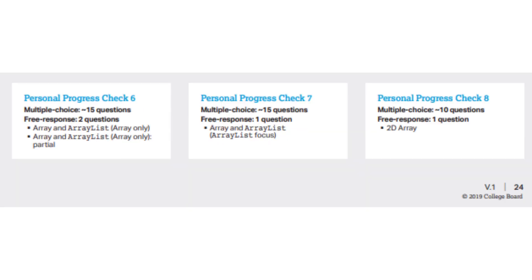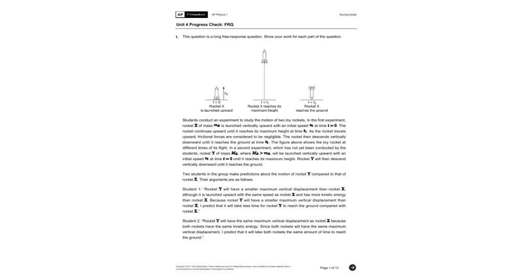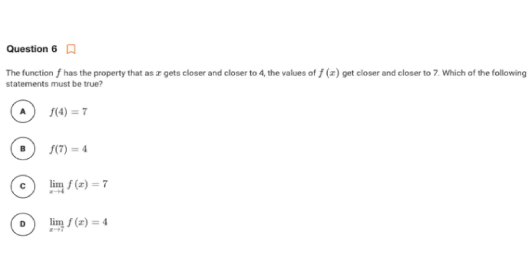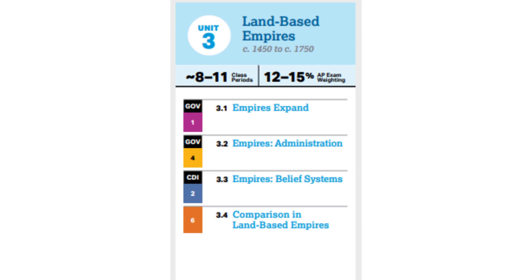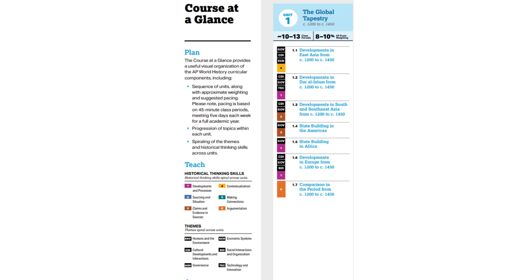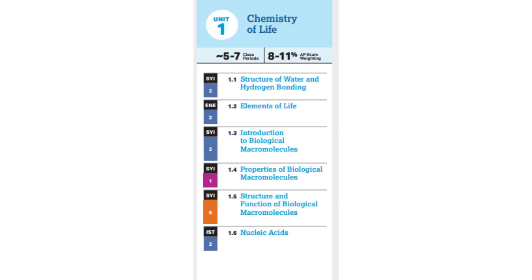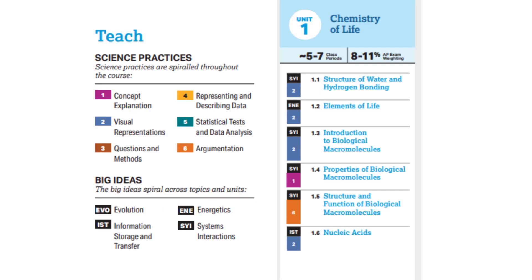The course at a glance also tells you if there are any personal progress checks available in AP Classroom. These are tests your teachers can assign with multiple choice and free response questions similar to those on the AP exam. They're really good practice, and I strongly recommend doing them. Each subtopic focuses on a certain skill or theme — for example, in AP Biology, topic 1.5 is marked in orange, meaning argumentation is an important skill for that lesson.